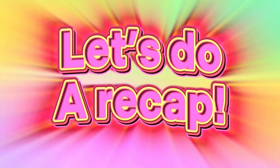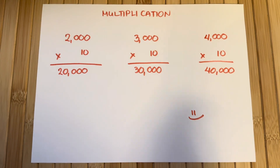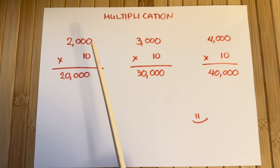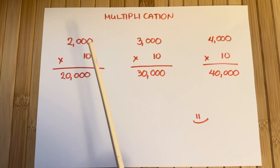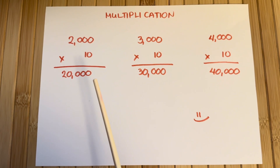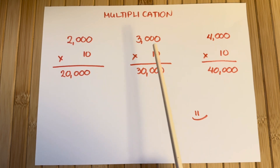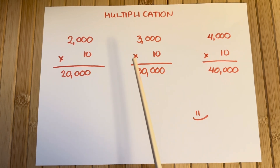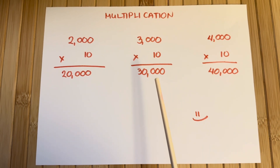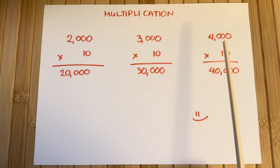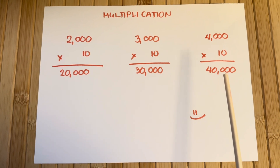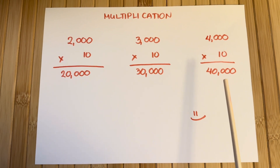Join me and let's do a recap. Let's learn multiplication: 2,000 times 10 is equal to 20,000. 3,000 times 10 is equal to 30,000. 4,000 times 10 is equal to 40,000.